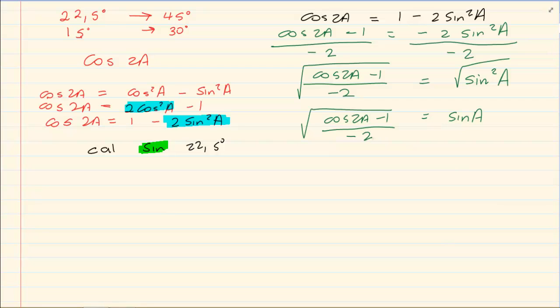Now what are we doing? We are letting A equal to 22.5 degrees. So wherever A is I am now going to put 22.5. So I have cos 2 times 22.5 minus 1 all over minus 2 root is equal to sin 22.5 degrees.